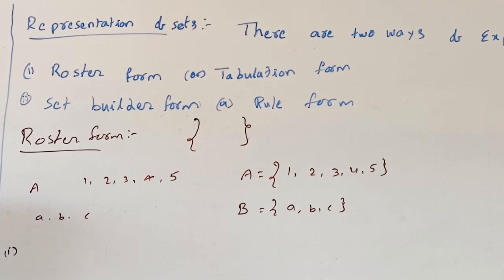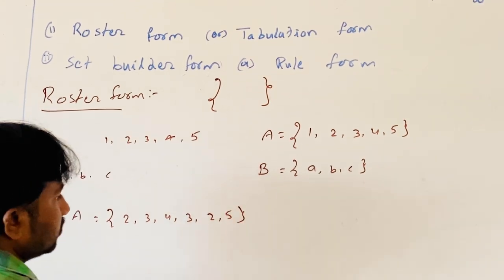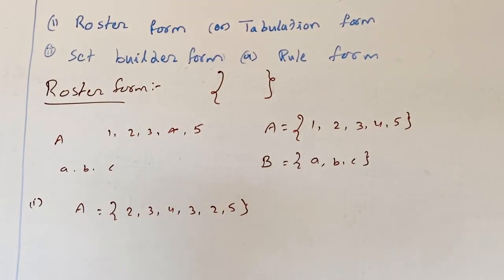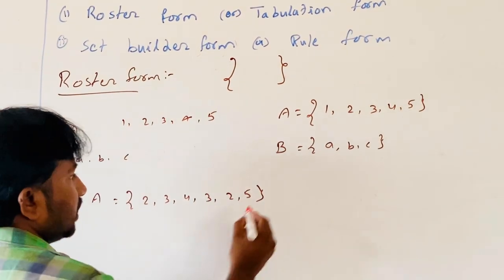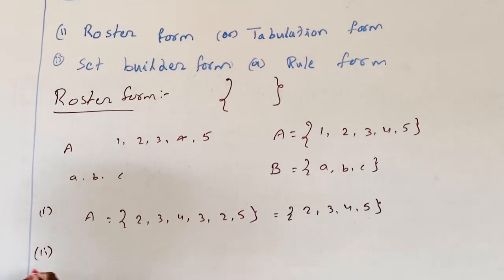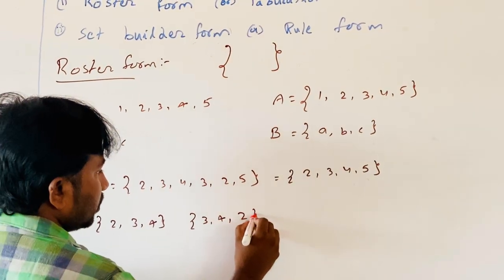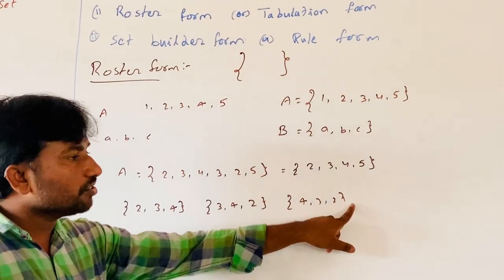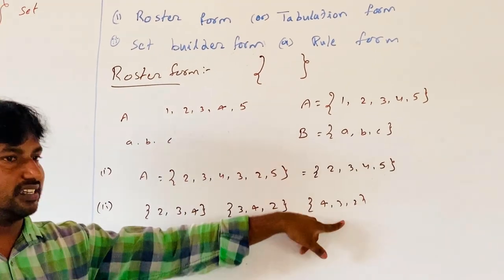For example, if a set contains elements 2, 3, 4, 3, 2, 5 — where some elements appear more than once — when writing in a set, each element is written only once. So the set is written as {2, 3, 4, 5}. Also, the order of elements in a set is not important. So {2, 3, 4}, {3, 4, 2}, and {4, 3, 2} are all the same set.